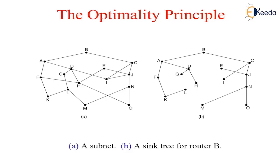As a direct consequence of the optimality principle, we can see that the set of optimal routes from all sources to the given destination form a tree rooted at the destination. Such a tree is called a sink tree, which is shown in the figure, where the distance metric is the number of hops. Note that a sink tree is not necessarily unique. Other trees with the same path length may exist. The goal of all routing algorithms is to discover and use the sink trees for all routers.